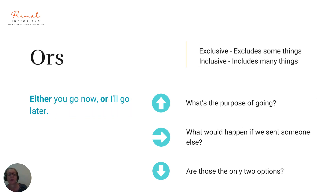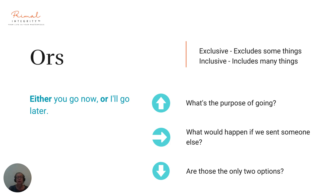Let's look at the ors. We have exclusive ors, which exclude some things, and inclusive ors, which include many things. The example here is an exclusive or: 'Either you go now or I'll go later.' If we want to take it upwards: 'Remind me, what's the purpose of going?' Sideways: 'What would happen if we sent somebody else?' Downwards: 'Are those the only two options? Could there be more? Are there other ways in which we could do this? How have you come to this conclusion?' An inclusive or example would be: 'Would you like to go on this road trip on Monday, on Wednesday, or another day that suits you better?' — leaving everything open-ended.